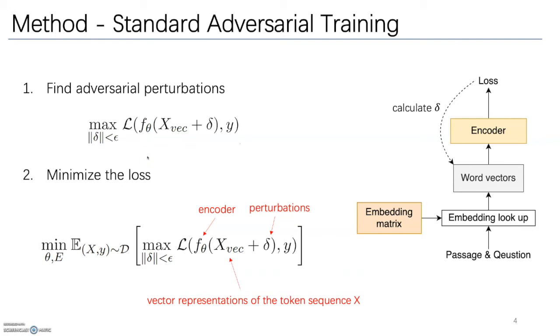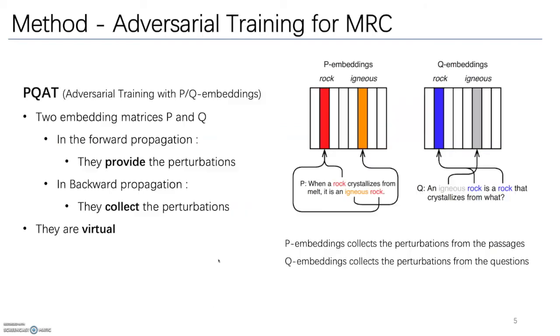In the embedding layer, then we minimize the loss on the new adversarial input, which is the sum of the original input and the perturbations.